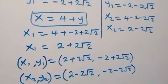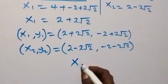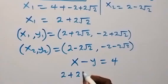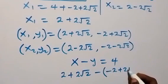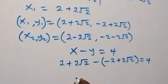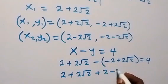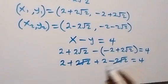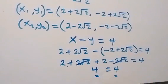To confirm, we can check from equation 1: x minus y equals to 4. Let's check with the first set of solutions. We have x as 2 plus 2 root 2, then minus y, which is minus (minus 2 plus 2 root 2). Opening the bracket with minus, this becomes 2 plus 2 root 2 plus 2 minus 2 root 2. The 2 root 2 terms cancel out, and 2 plus 2 equals 4, which is equals to 4. Left hand side equals right hand side, so it satisfies equation 1.